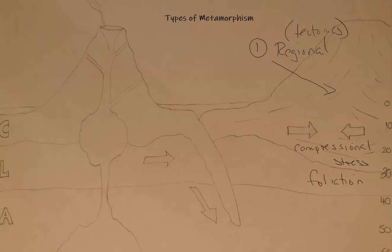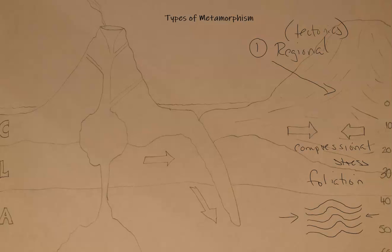You can see how the folds start off horizontal and layered flat, and then after compressional stress is applied, you get folding. In this very large area we usually have a convergent plate boundary with an active plate margin. With continent hitting continent — similar granitic densities and compositions — you get the formation of orogens through fold mountains. The Himalayas are a great example.